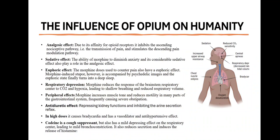Codeine is used as a cough suppressant but also has a mild depressing effect on the respiratory center, leading to mild bronchoconstriction. It also reduces secretion and induces the release of histamine. As an analgesic, due to its affinity for opioid receptors, it impedes the ascending nerve pathway transmission of pain and stimulates the descending pain modulation pathway.